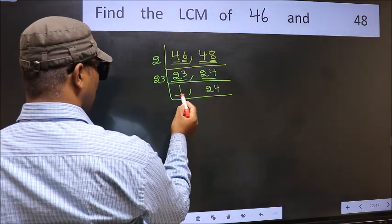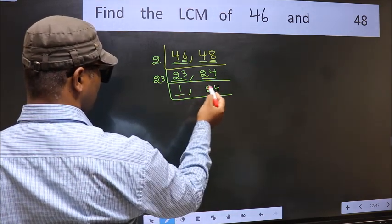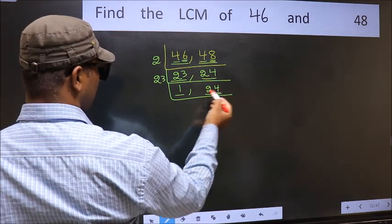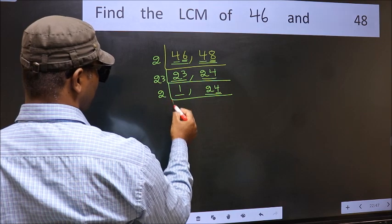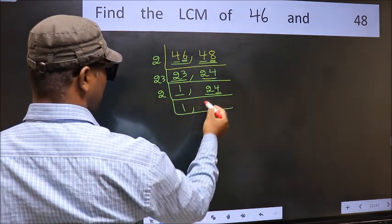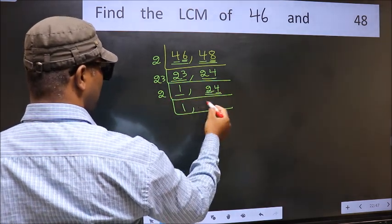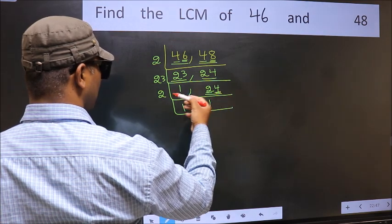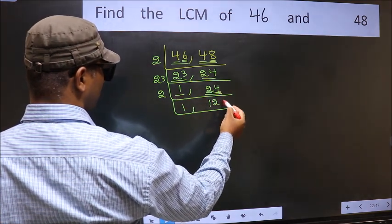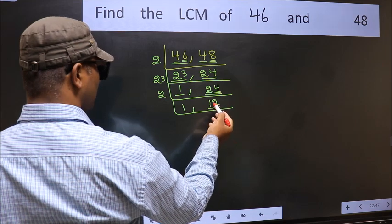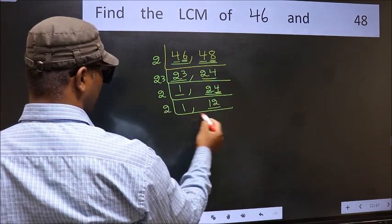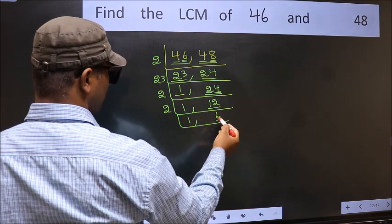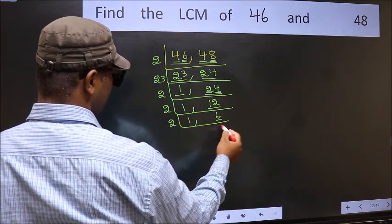Now we got 1 here, so focus on the next number 24. The last digit is 4, so take 2. The first digit is 2 — 2 × 1 = 2. The other digit is 4 — 2 × 2 = 4. Now here we have 12: 12 = 2 × 6. Now we have 6: 6 = 2 × 3.